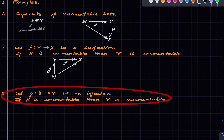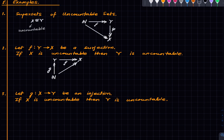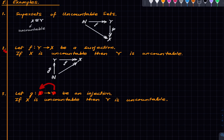Third, if there is an injection from X to Y and X is uncountable, then Y is also uncountable — intuitively Y is bigger than X. The formal proof uses the fact that if there is an injection from X to Y then there is a surjection from Y to X, and then we apply the second result above.